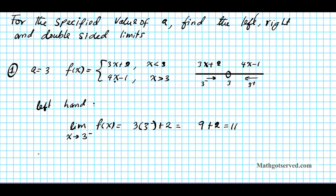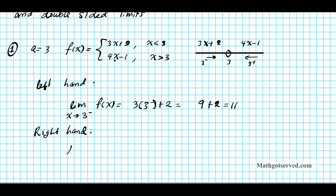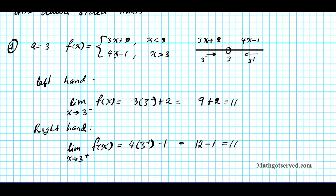Now let's find the right-hand limit. We're going to be looking for the limit as x approaches three from the right of the function, which equals four times three from the right minus one — because the function to the right of three is four x minus one. When we work that out, we get twelve minus one, which equals eleven.